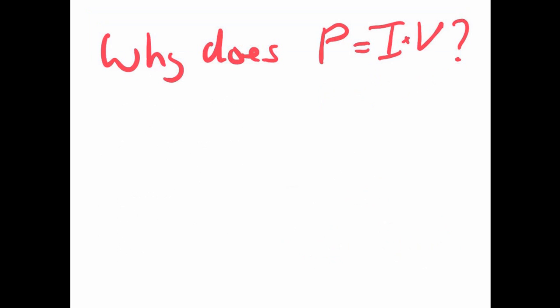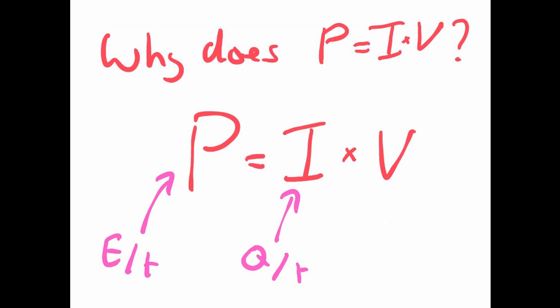But why does P equals IV? Let's have a further look at our equation. So power is the energy per time. Current, that's the charge per time. And voltage, that's the energy per charge.